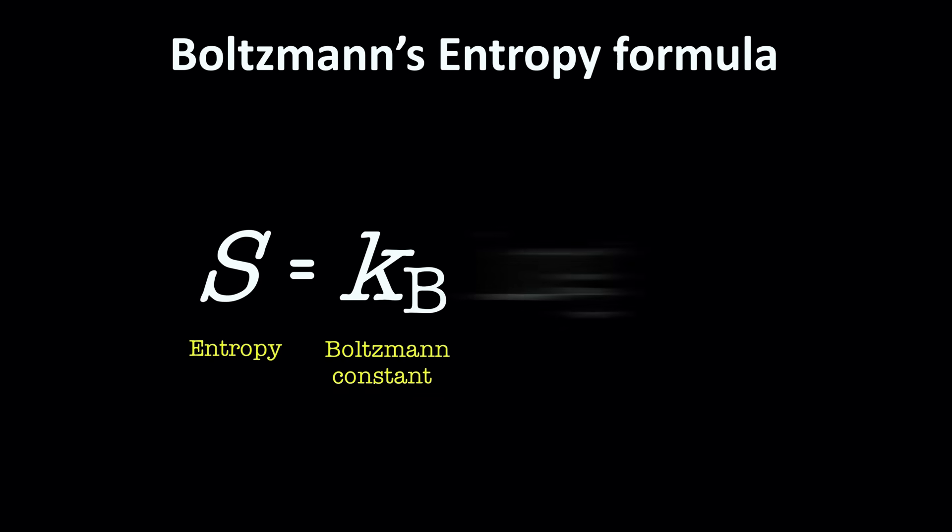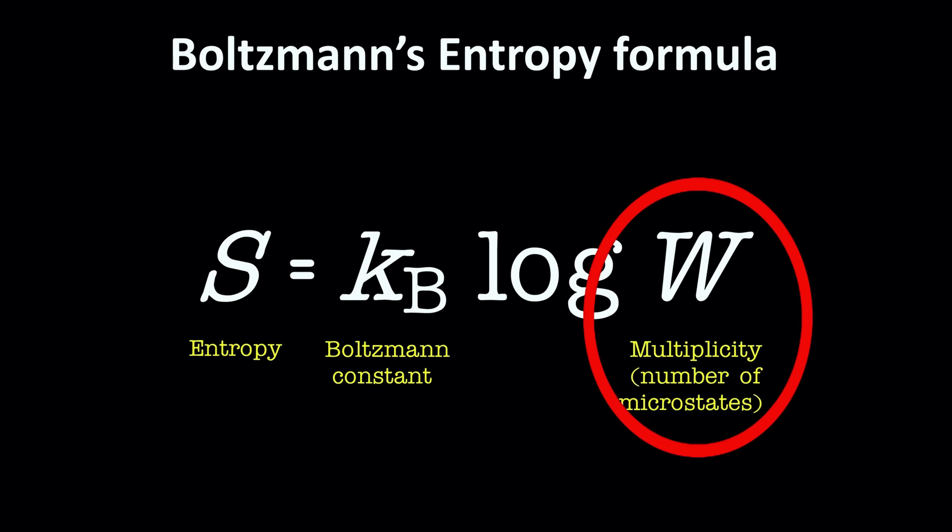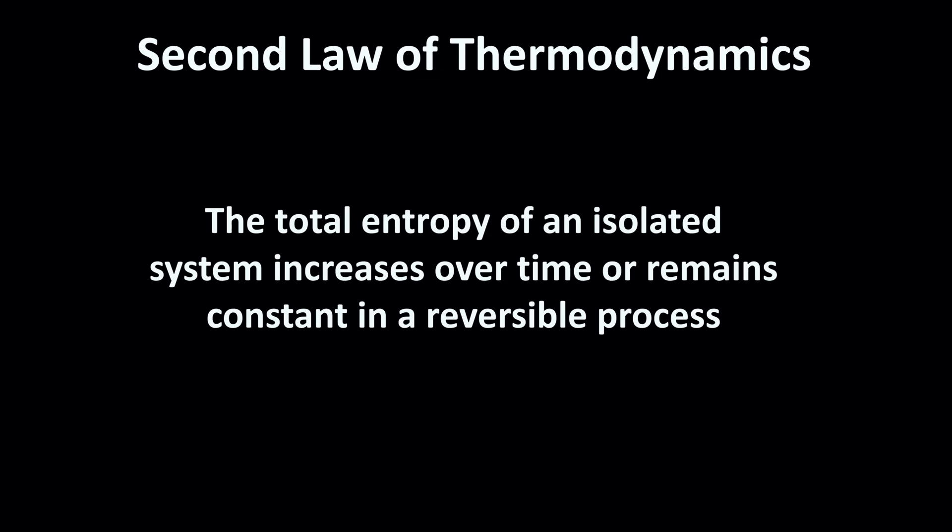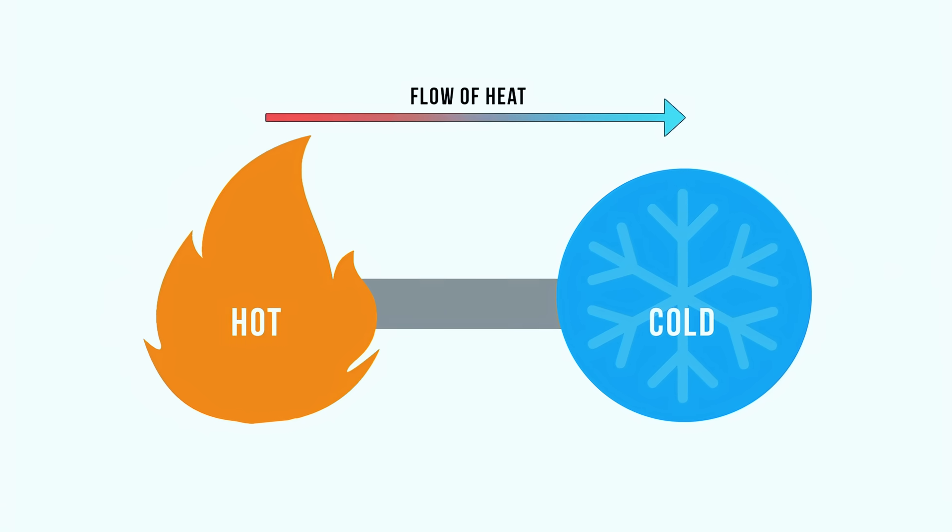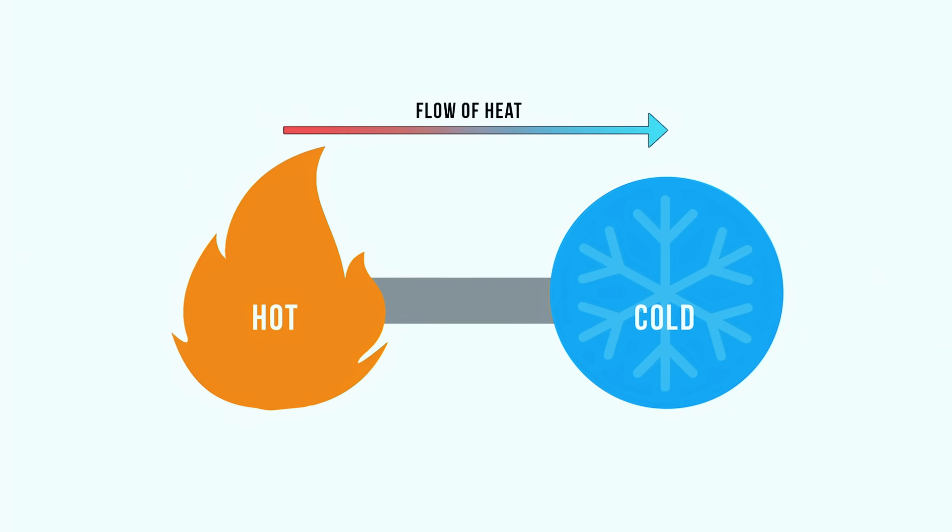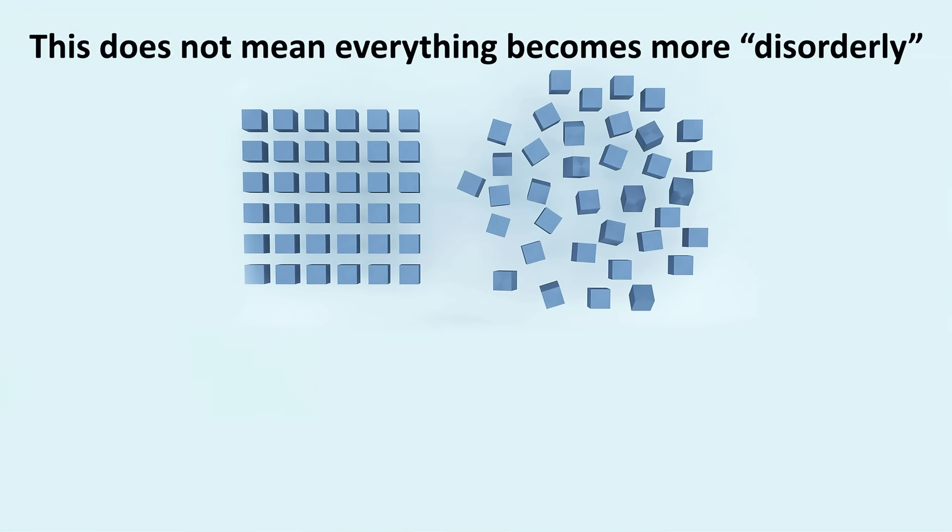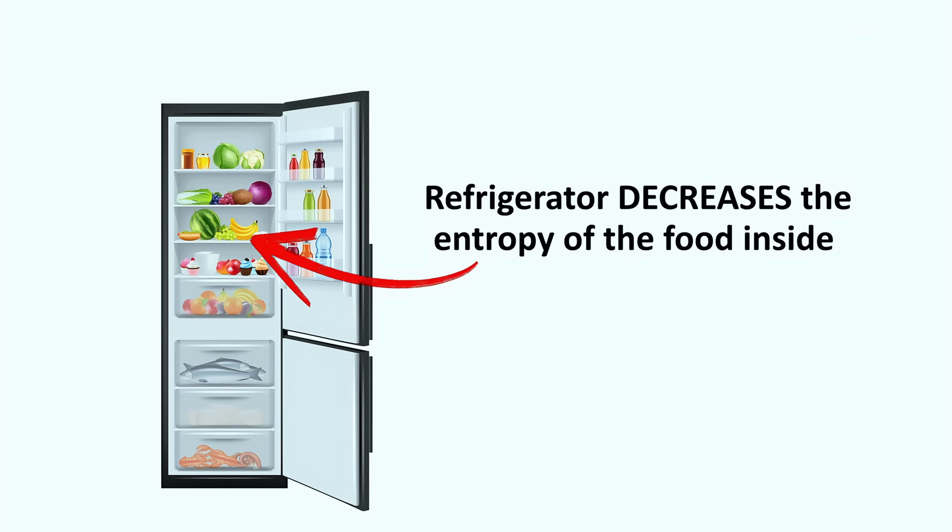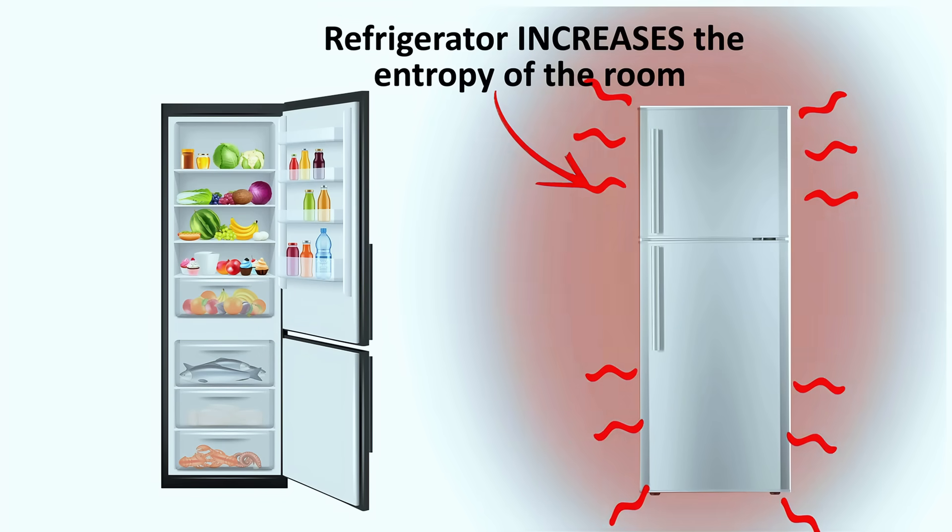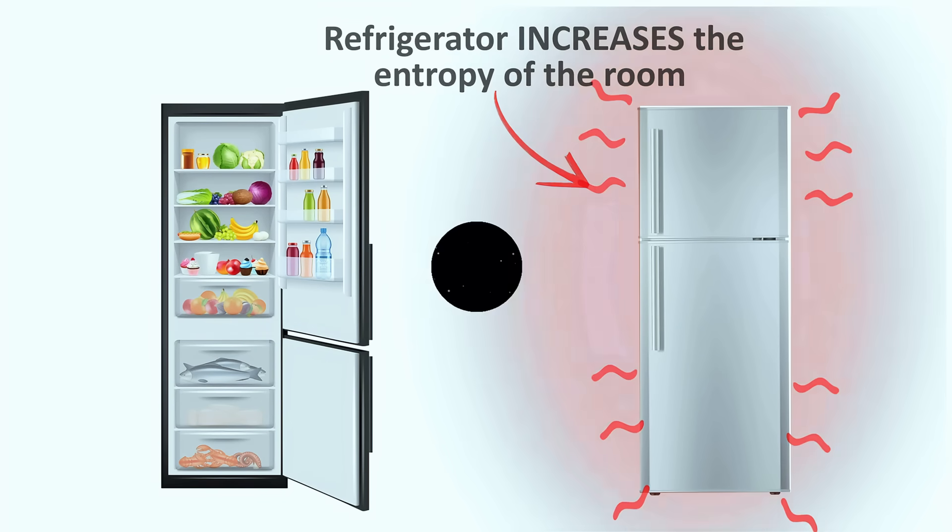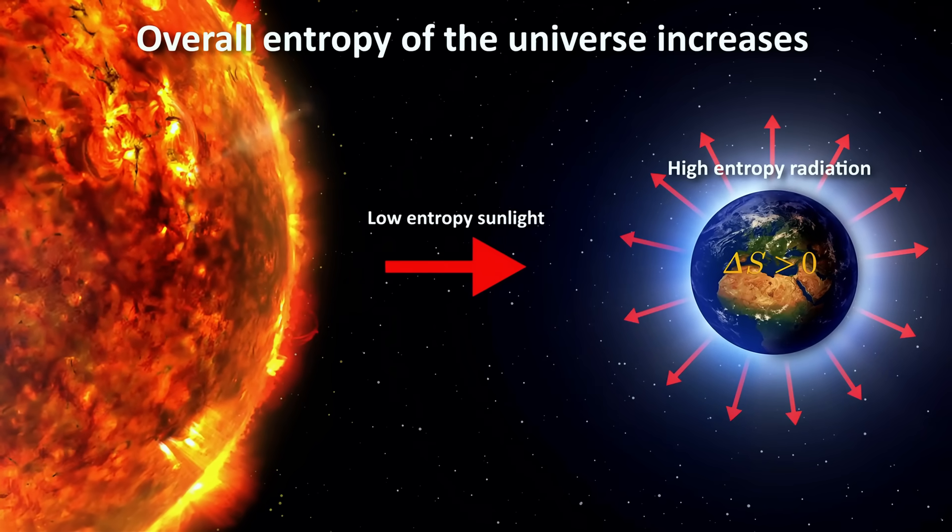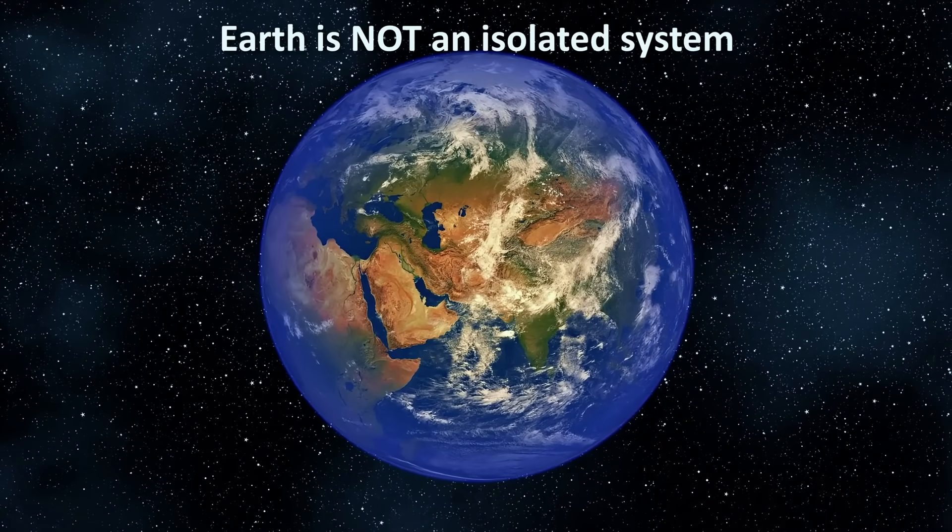Entropy counts how many microscopic arrangements correspond to the same macroscopic state. The second law of thermodynamics says that the total entropy of an isolated system tends to increase. Heat flows from hot to cold, because that's the overwhelmingly likely direction. Does increasing entropy mean everything becomes disorderly? Not exactly. Local order can increase if entropy rises elsewhere. A refrigerator decreases the entropy of the food inside it, but increases the entropy of the room where it is, by dumping heat. Earth receives low entropy sunlight and radiates high entropy infrared, enabling complex structures such as life, while the universe's total entropy still increases. Earth by itself is not an isolated system.